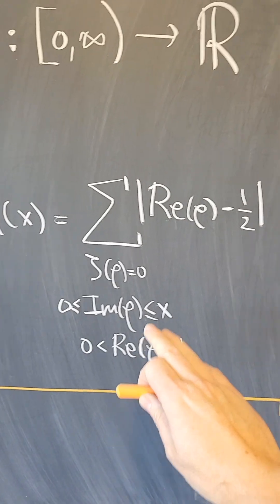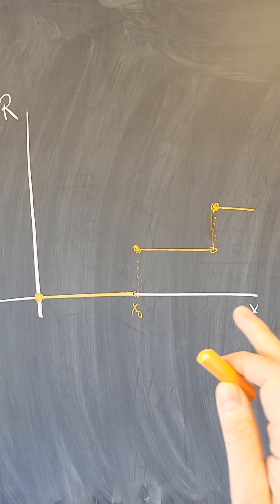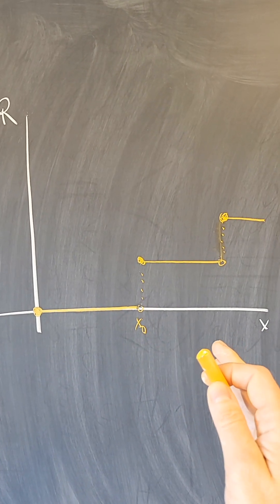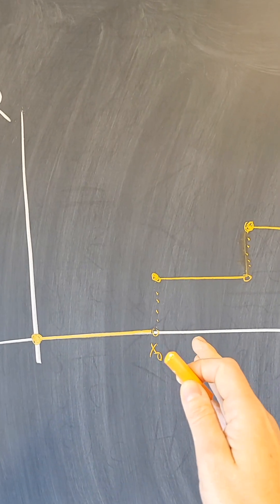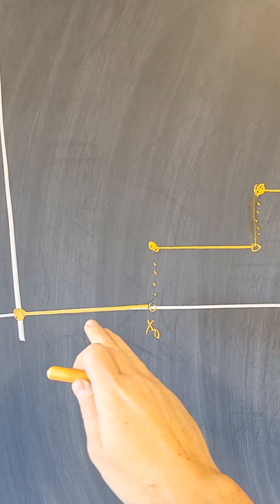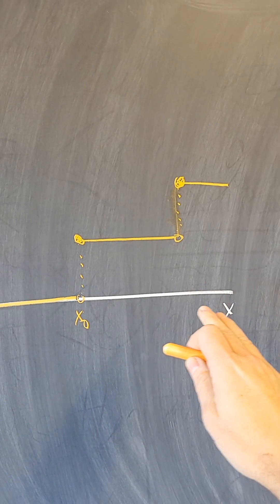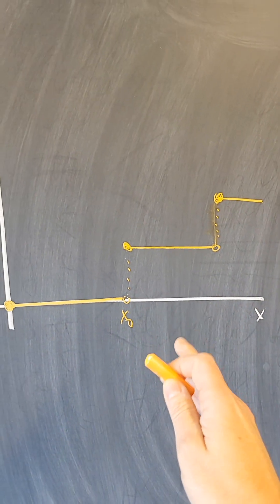and that the real part is in the critical strip. And for each one of those, I add the contributions. So there are two possibilities for the graph of the function R. One, the Riemann hypothesis is true. There is never a contribution by a zero that is off of the line, and the function is constant equal to zero.